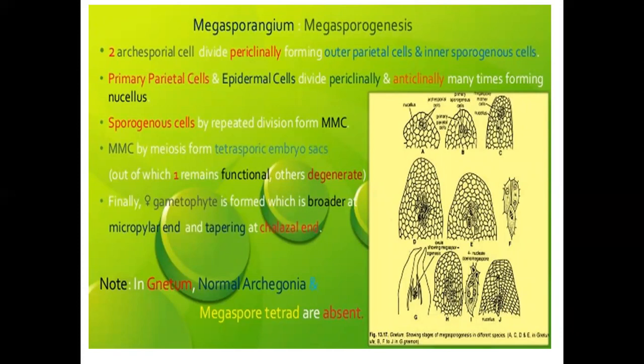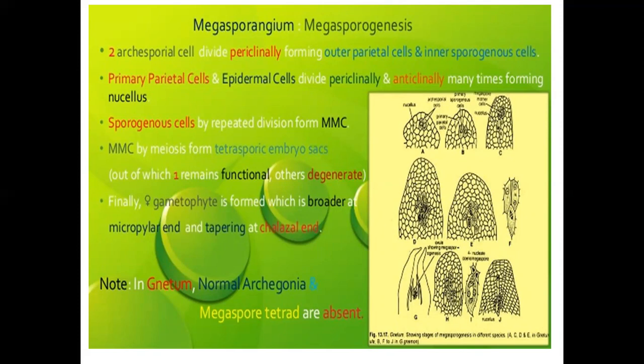Megasporangium and megasporogenesis: two archesporial cells divide periclinally forming outer parietal cells and inner sporogenous cells. Primary parietal cells and epidermal cells divide periclinally and anticlinally many times forming new cells. Sporogenous cells by repeated division form megaspore mother cells. The megaspore mother cell by meiosis forms a tetrasporic embryo sac, out of which one remains functional and the other three degenerate. Finally, the female gametophyte is formed, which is broader at the micropylar end and tapering at the chalazal end. In Natum, normal archegonia and megaspore tetrads are absent.